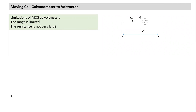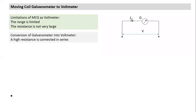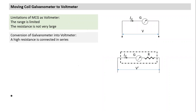Both limitations can be corrected in one way: connect a high resistance in series to convert the galvanometer into a voltmeter. The only way to increase resistance is by connecting additional resistance in series. This whole setup — MCG with a suitable high resistance in series — can be called a voltmeter. A voltmeter is always connected in parallel across the points where potential difference is to be measured.